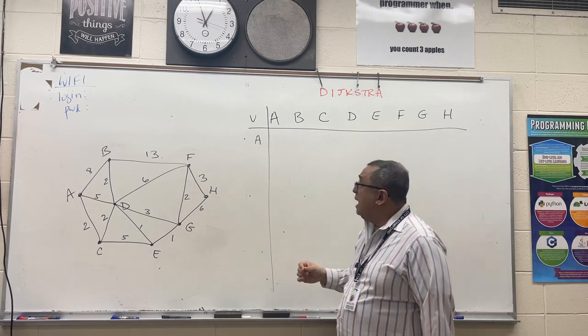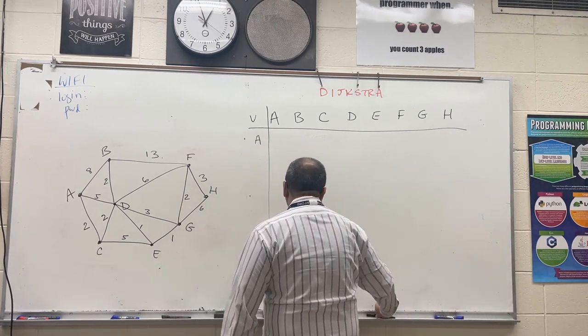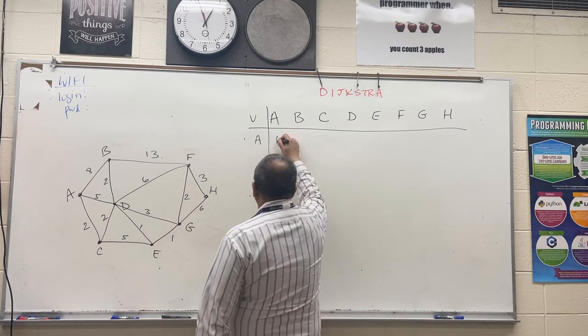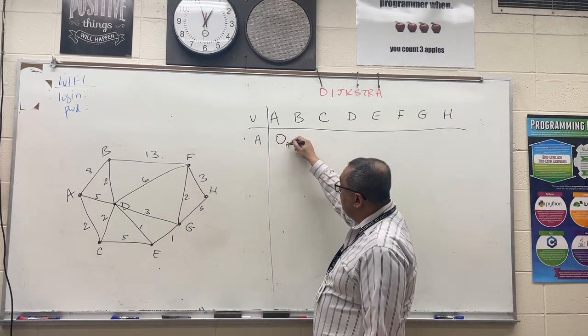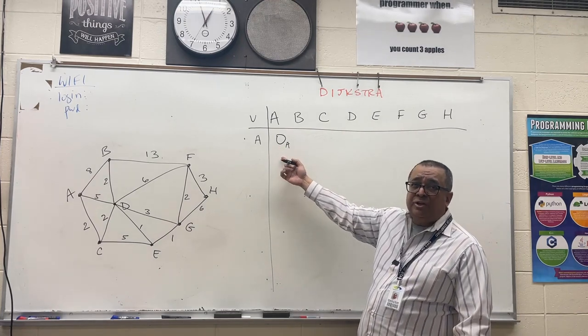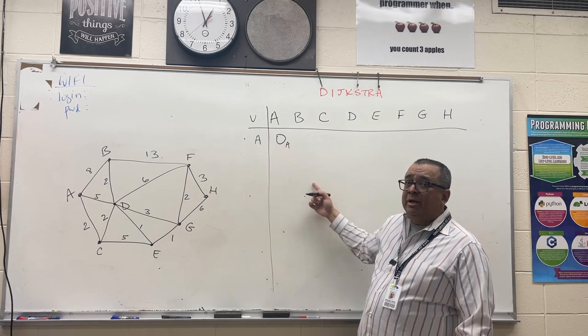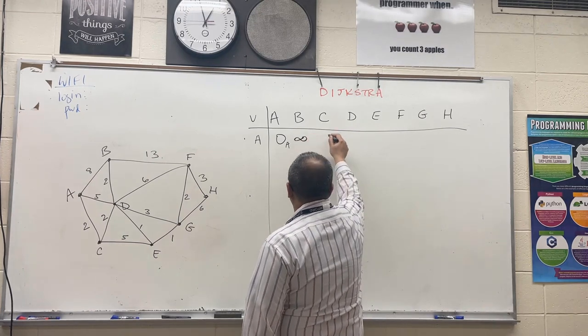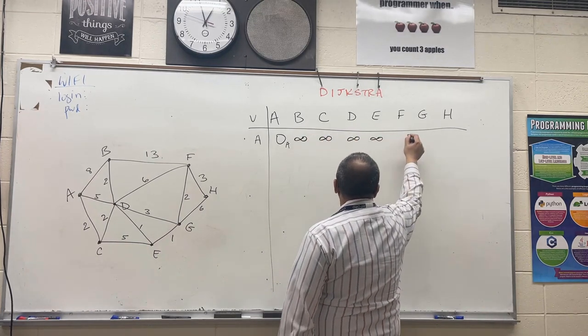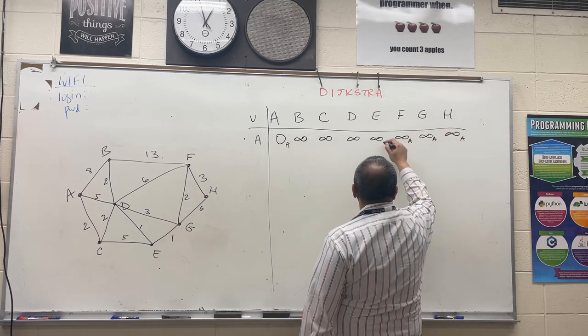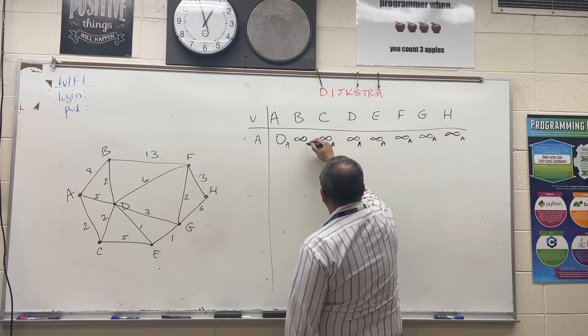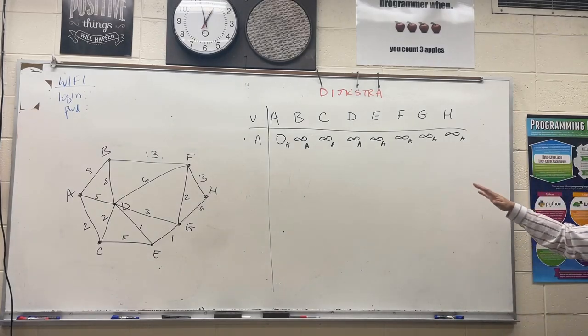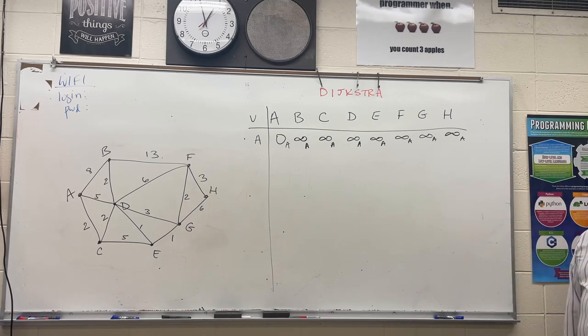I'm going to say that our distance from A to A is going to be zero because we're already there. I'm going to put a little subscript here to indicate where I came from. In this case, I started at A and finished at A. As a starting condition, I'm going to say that my distance to all these other nodes is going to be infinity. I'm going to mark a subscript of A for all of them because that's the only node that I'm coming from right now. So I haven't actually started the algorithm yet. This is sort of my pre-looping condition, my initial condition for the matrix.